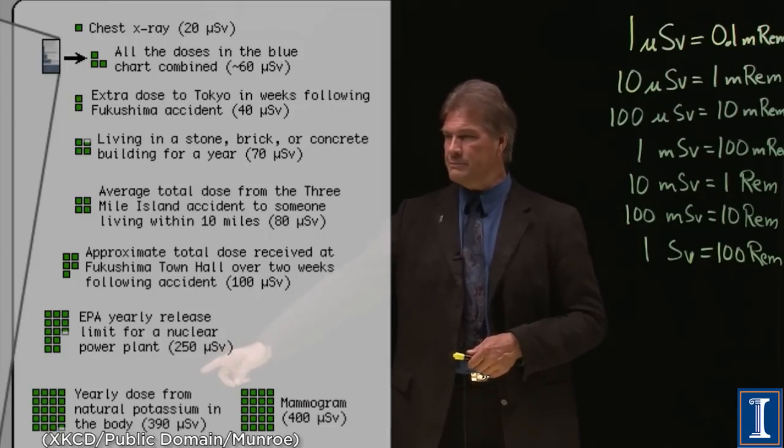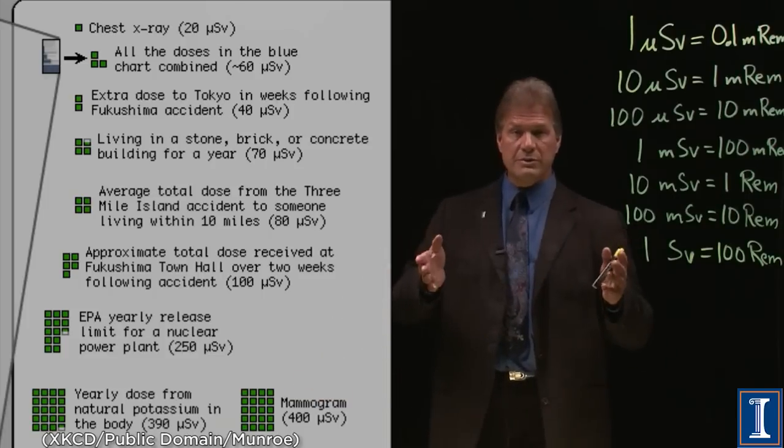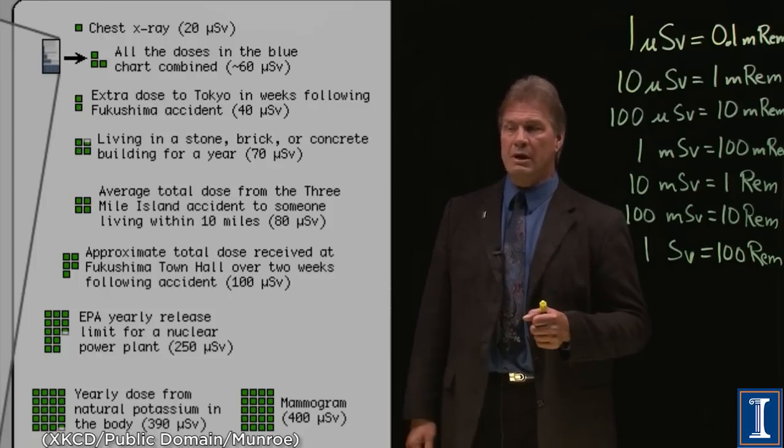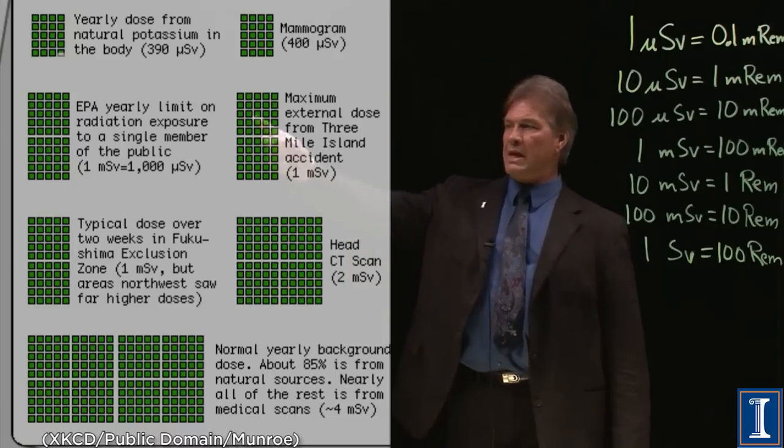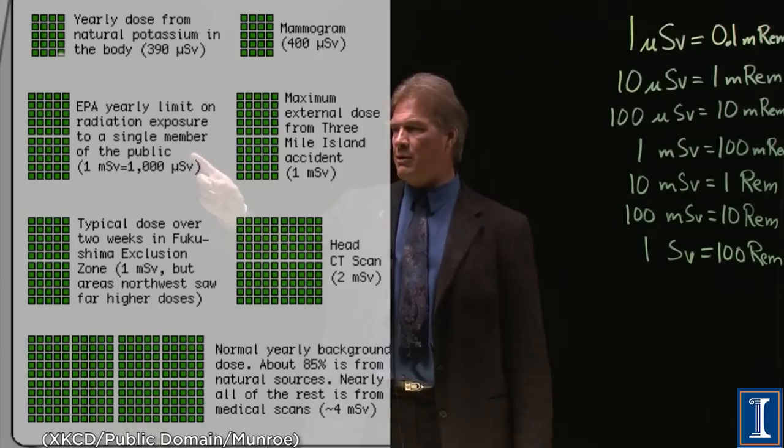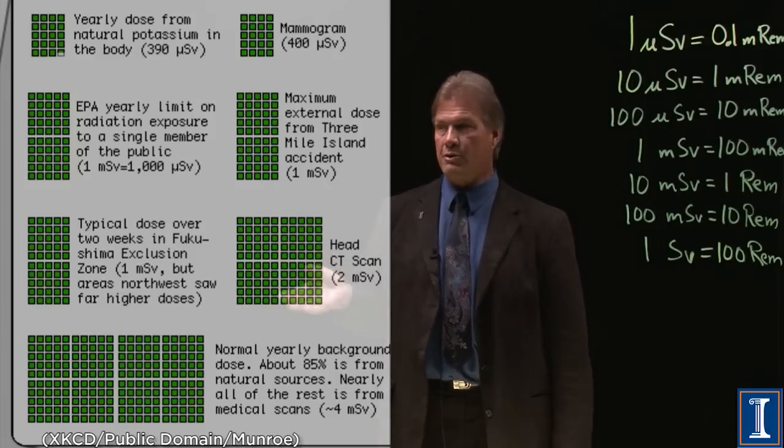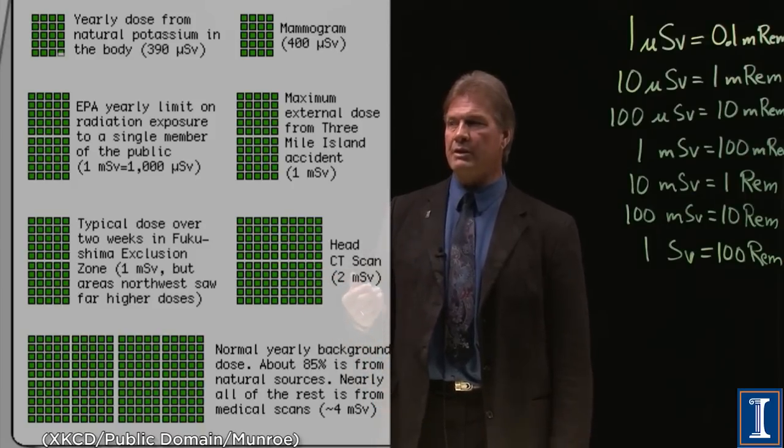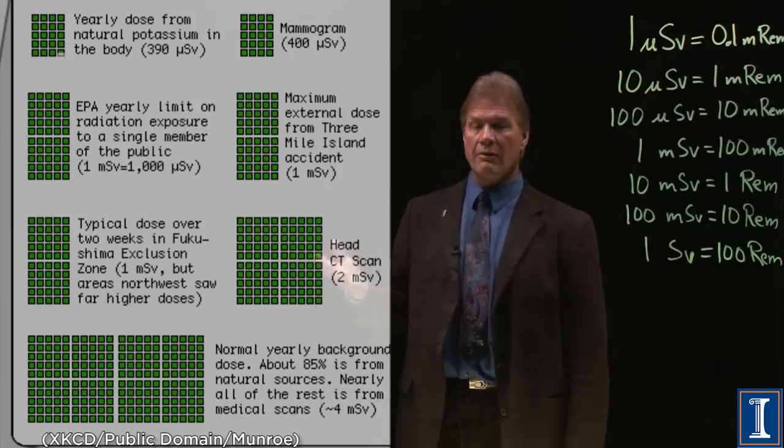This is the potassium in your body. And this is what you get from a mammogram. A mammogram, of course, can be extremely important because it can detect breast cancer early. Just because you get a whole 40 millirems from it is nothing to worry about. Compared to the potassium in your body, or the mammogram, this is the amount of radiation that you're allowed to get for the public: 100 millirems extra per year.